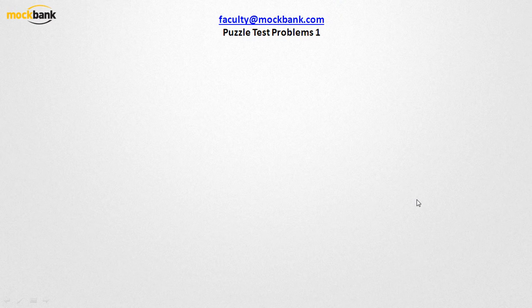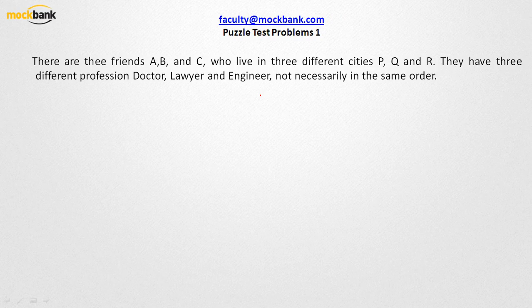To make you understand what they ask in puzzle test problems, here is the data: there are three friends A, B, and C. These three friends are living in three different cities P, Q, and R. They have three different professions — doctors, lawyers, and engineers — but not necessarily in the same order. So there are three people living in three different cities and their professions are lawyer, engineer, and doctor, but not in the same order. That is what we need to find out.